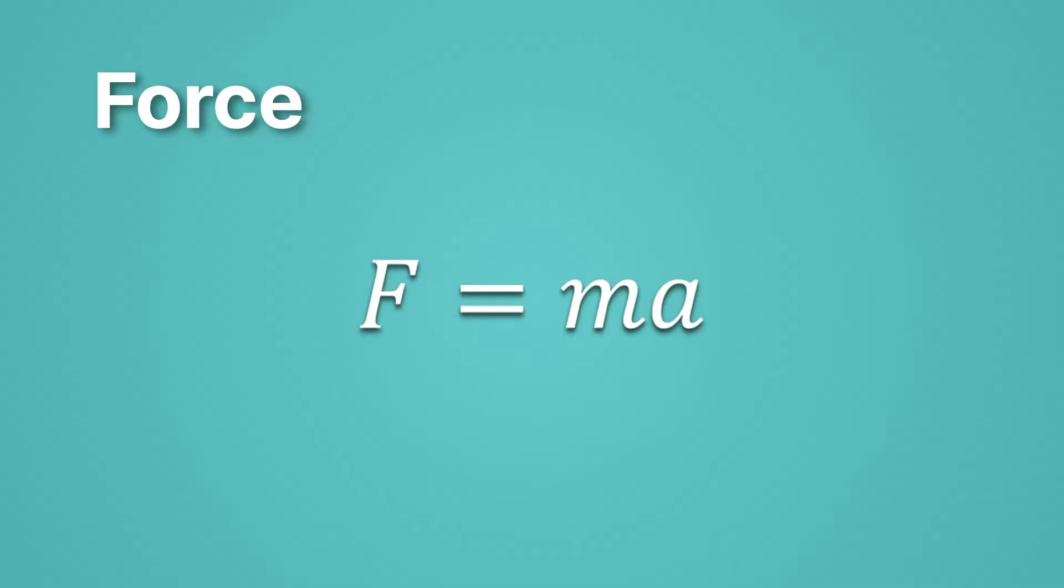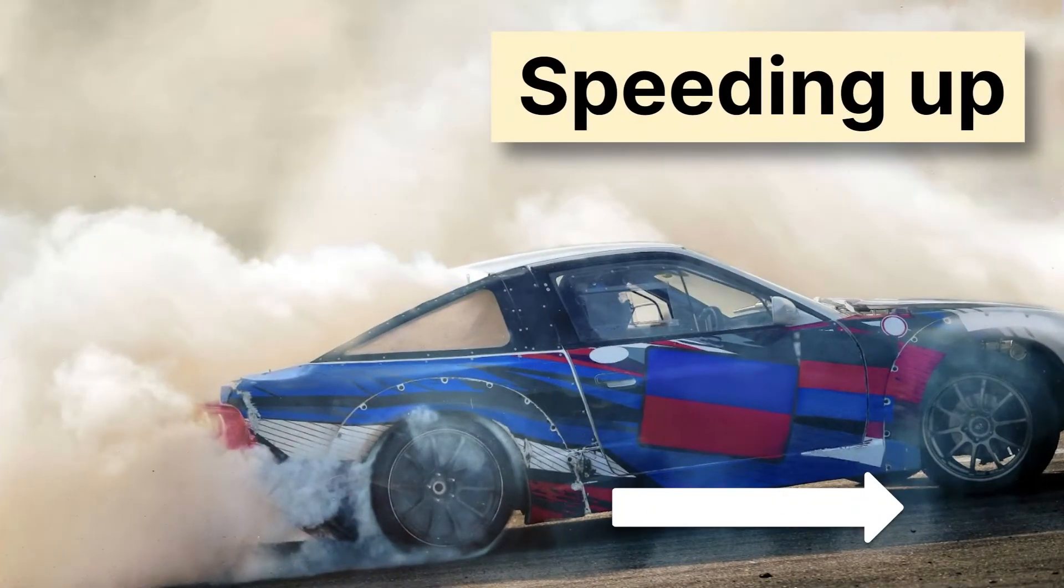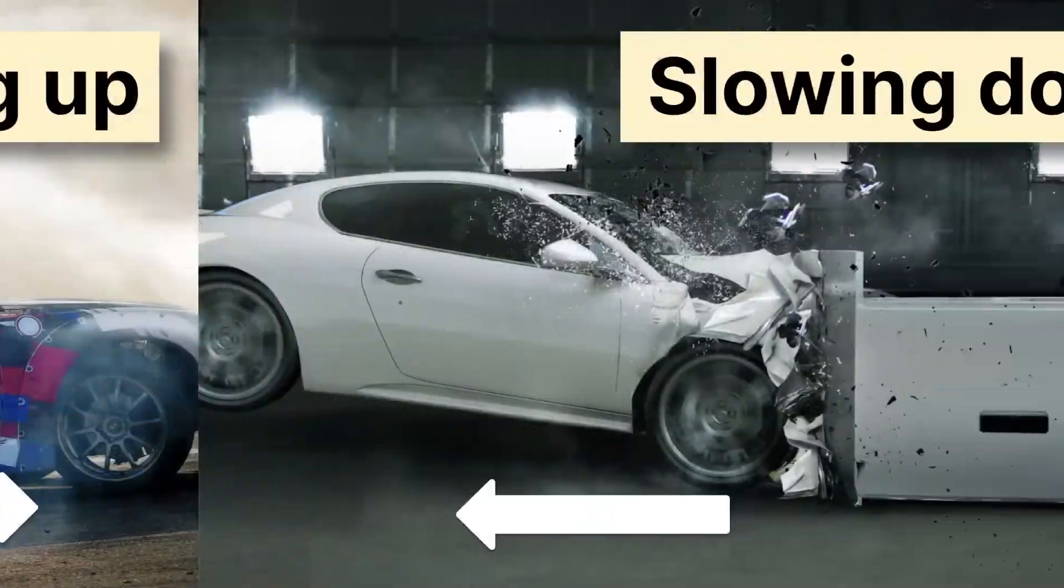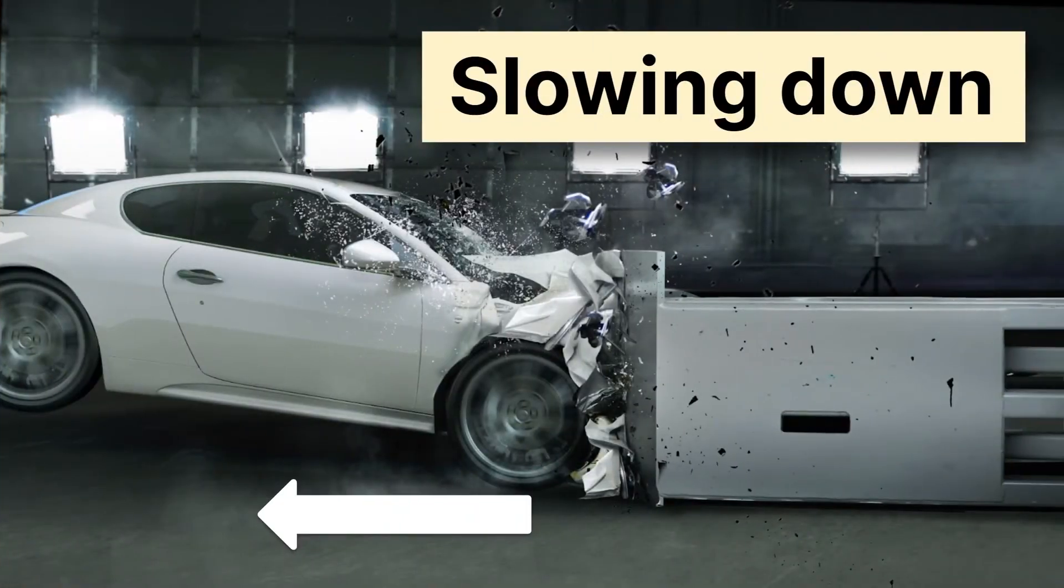Now let's look at circumstances where we know there's a force. We know there's a force whenever there's acceleration. So when we speed up, we're accelerating and there must be a force. And it's pointing in the direction we're speeding up. When we slow down, there's acceleration and so there must be a force. Here the force is pushing the car backwards to make it go slower. That wall is applying a force, a pushing force on that car.